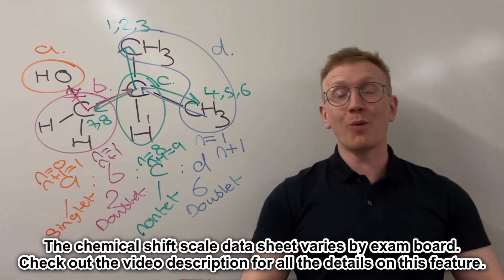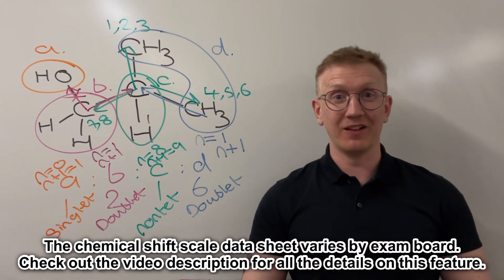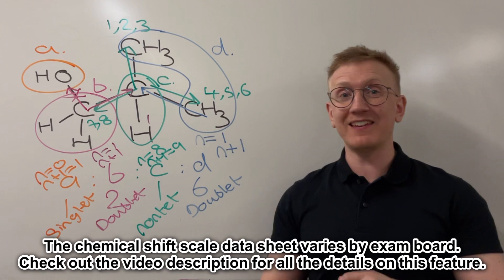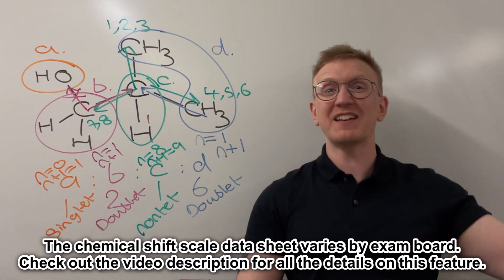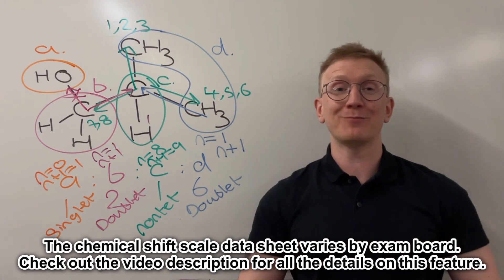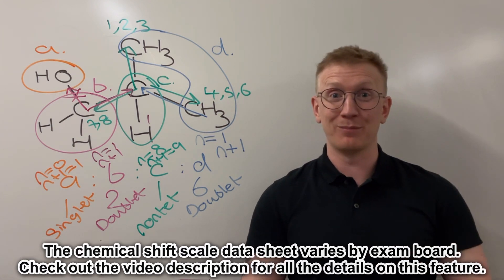What we could then pair with this, if you've got one to hand, is the chemical shift scale. So you can put where you'd expect to see these across the x-axis on that delta scale that you get provided with in the A-level chemistry exams, regardless of your exam board.